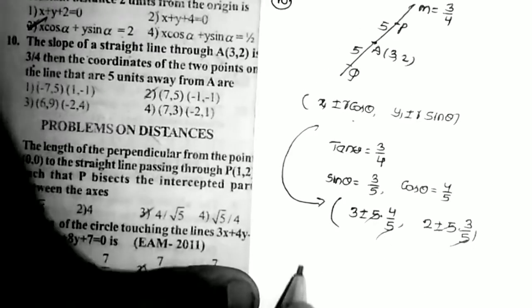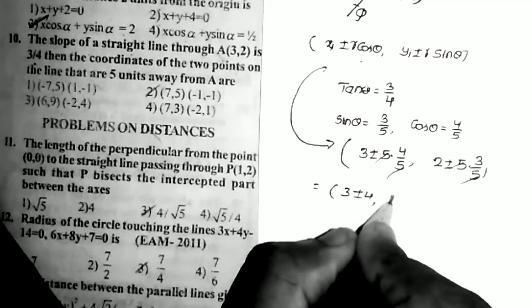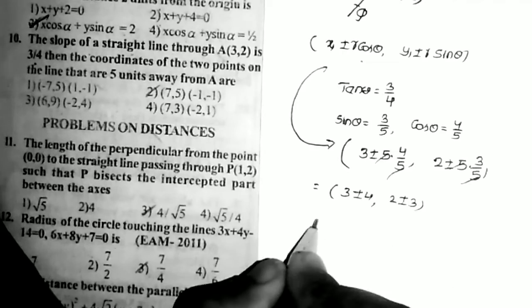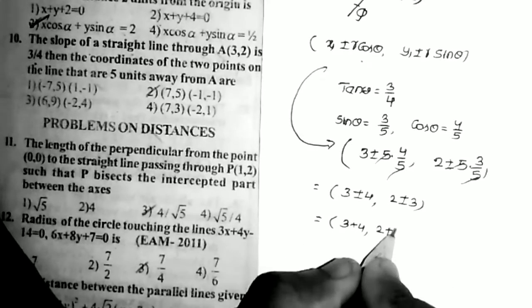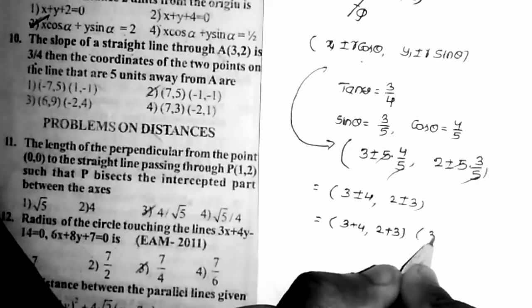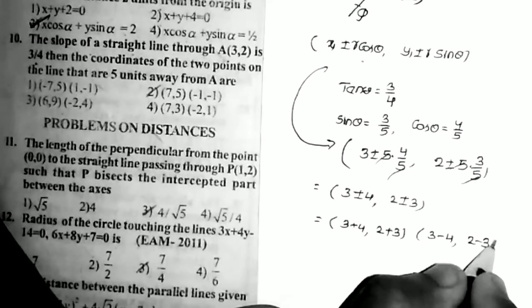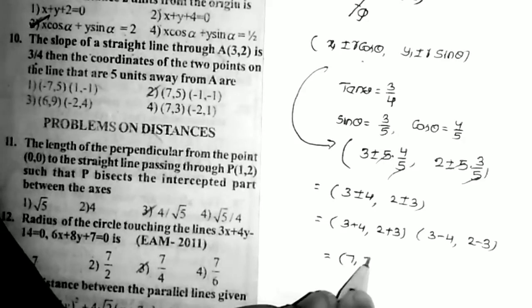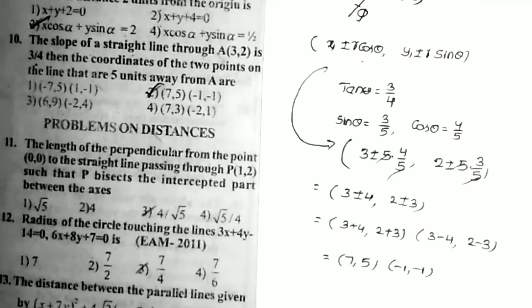Therefore the two points are (3 + 4, 2 + 3) = (7, 5) and (3 − 4, 2 − 3) = (−1, −1). That is the second option. The remaining problems will be continued in the next video.